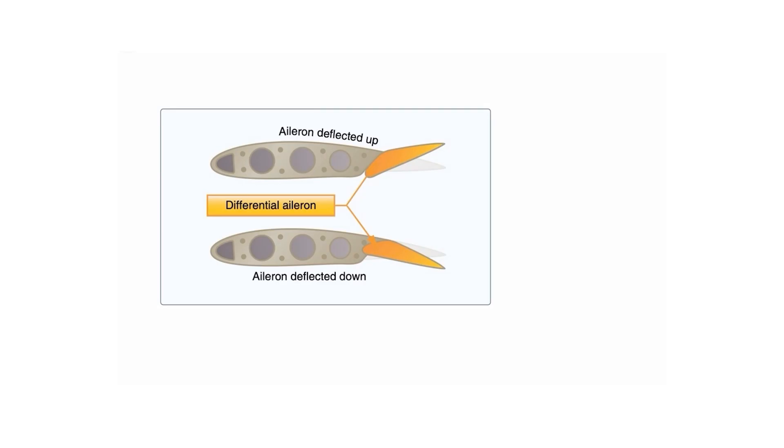But as airplanes have become more advanced and manufacturers have done a better job, they've built things such as differential ailerons, and they've built things like frise-type ailerons. So let's look at differential ailerons.